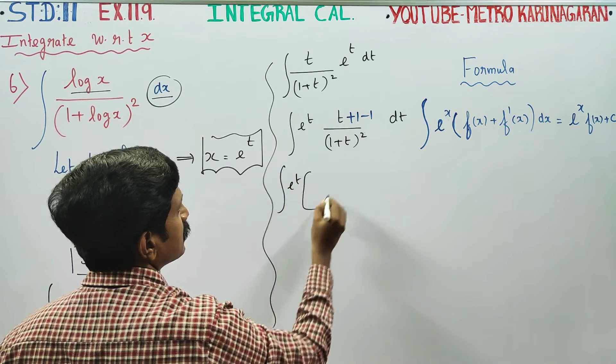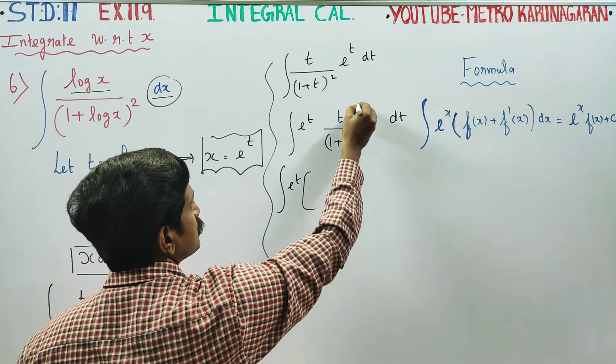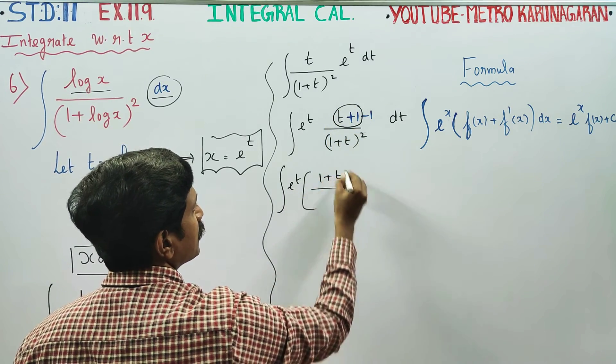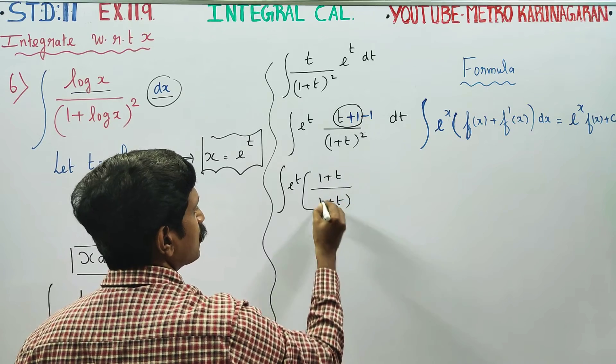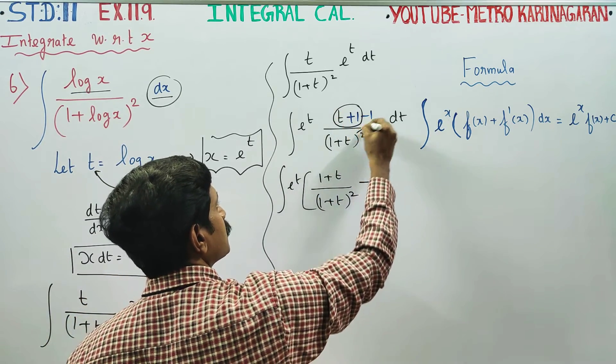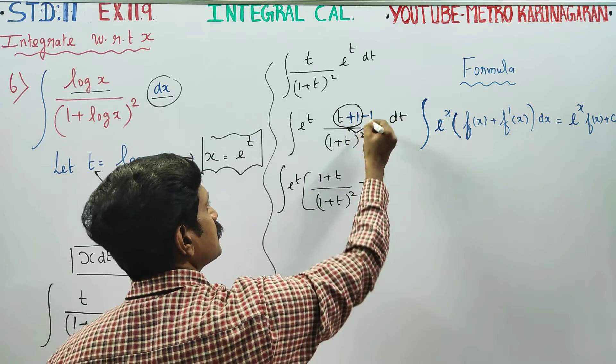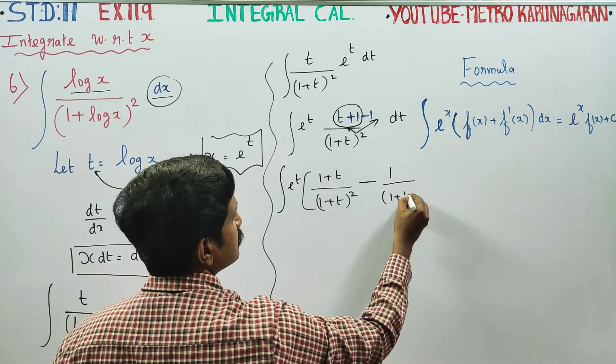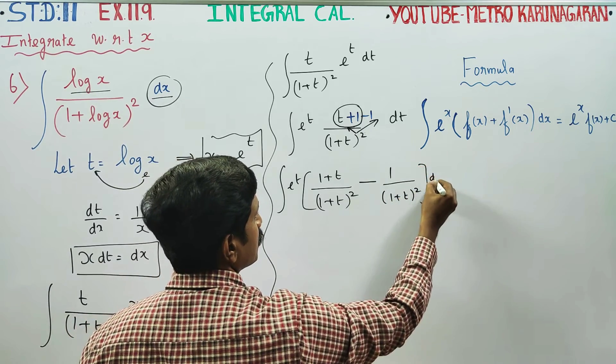Next stage, integration e power t, 1 plus t by 1 plus t whole square into dt.